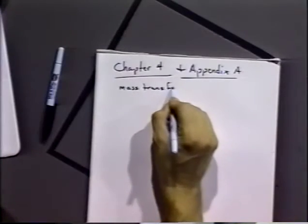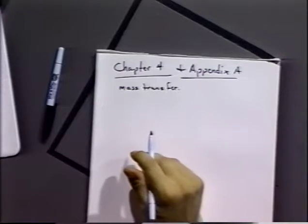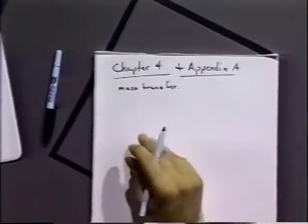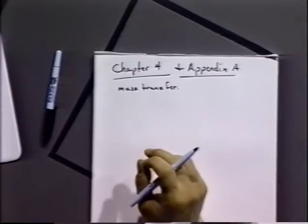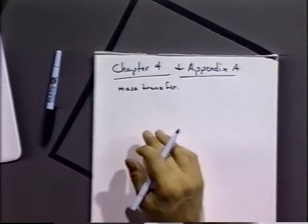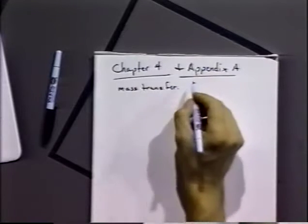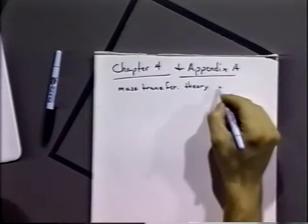We're going to be discussing in Chapter 4 the idea of mass transfer. Whereas before we gave a very basic and semi-empirical treatment of mass transfer using a mass transfer coefficient, now we're going to actually go ahead and solve some equations and get some real mathematical descriptions of mass transfer in electrochemical systems. So we're going to be discussing some mass transfer theory and solutions.